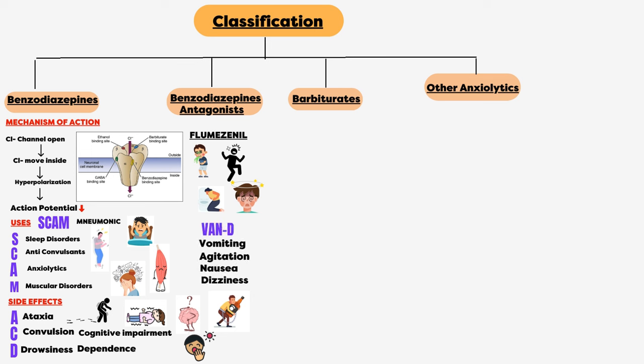Coming towards the next class of drug, that is barbiturates. Its mechanism of action is the same as that of benzodiazepines, with only difference being that benzodiazepines increase the frequency of opening of chloride channels, while barbiturates increase the duration of opening of chloride channels.